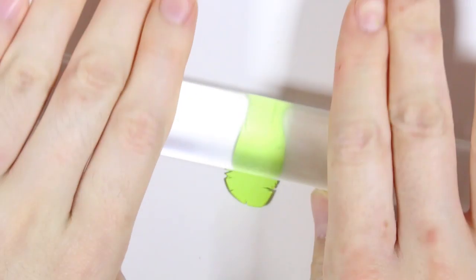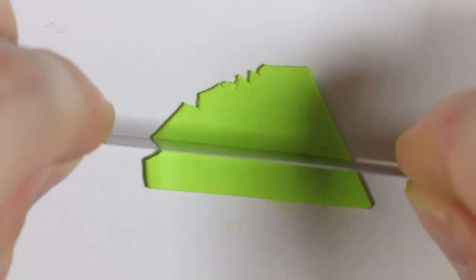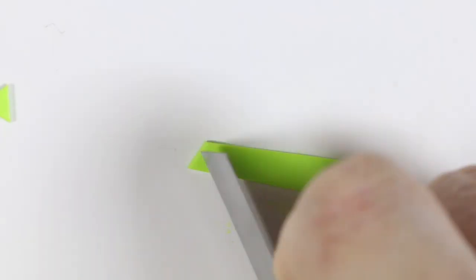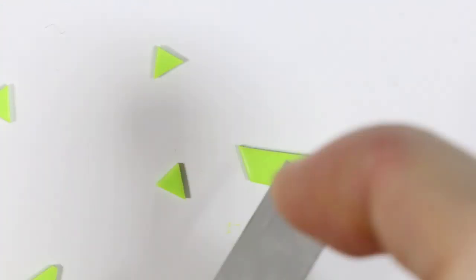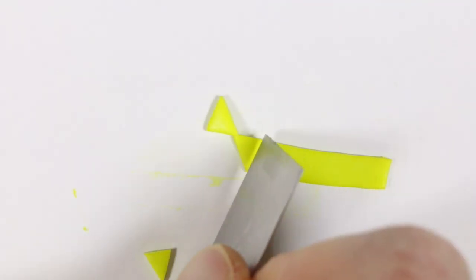Then I'm taking a pale light green color, different from the other light green that we used, and I'm rolling it really flat and thin. With my blade I'm going to cut it out into little triangles. And I'm going to be doing the same thing with lime green clay as well.